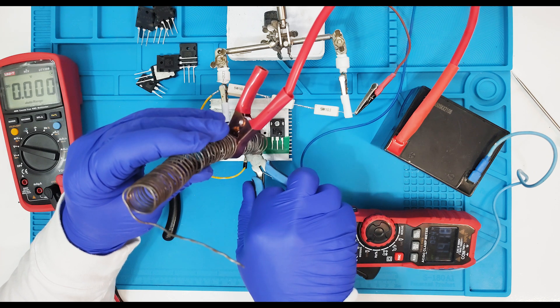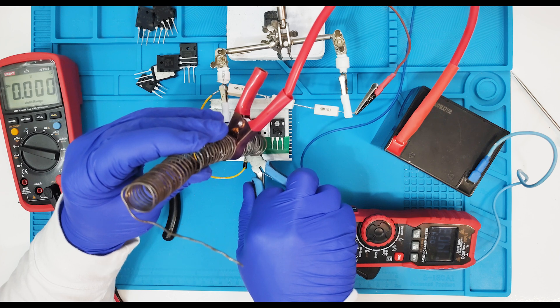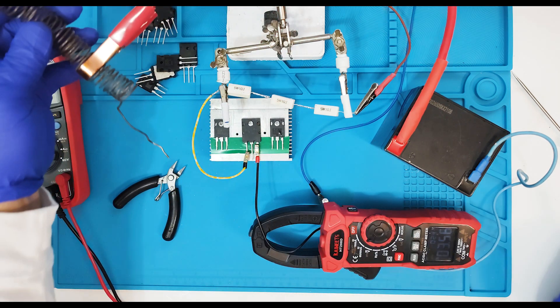Let's calculate. DC current gain is equal to minimum 4. That's equal to 14 A divided by 3.5 A. That's absolutely correct.